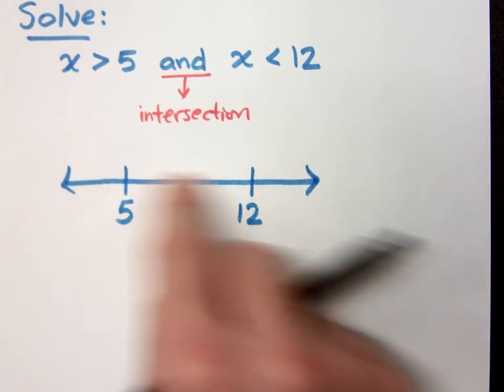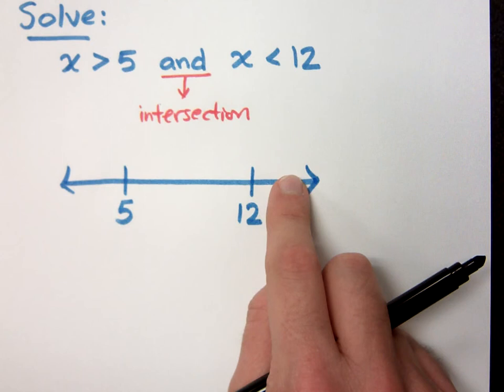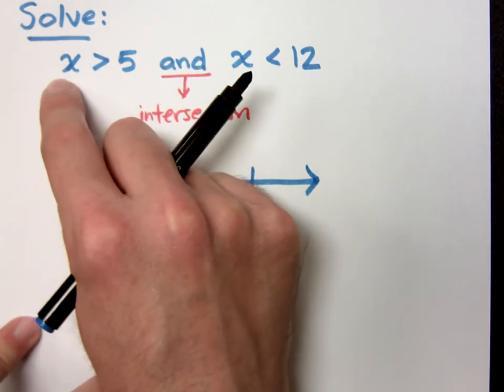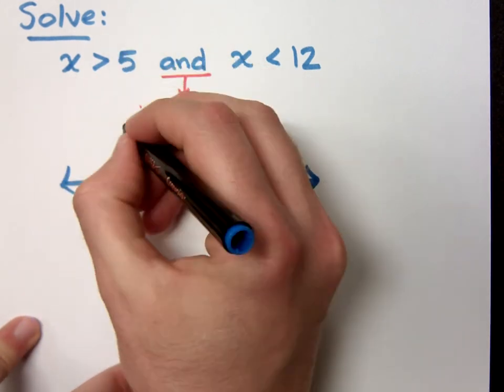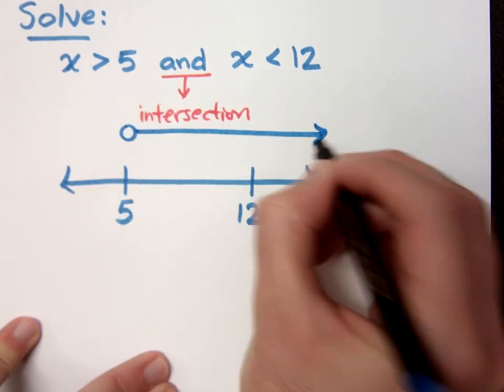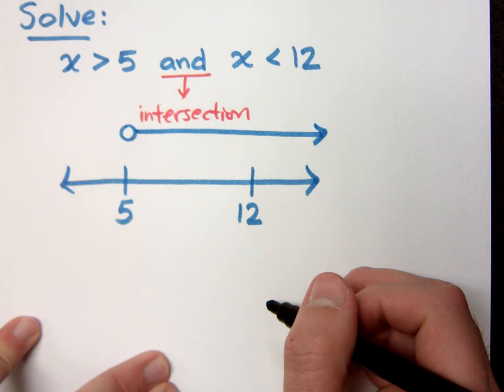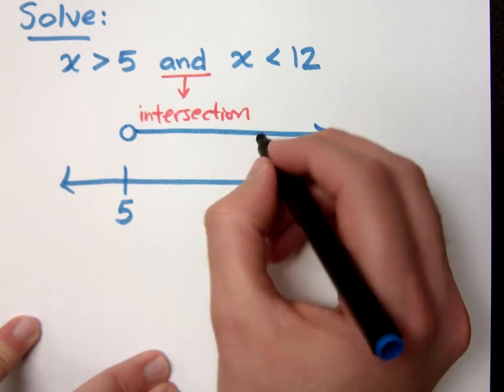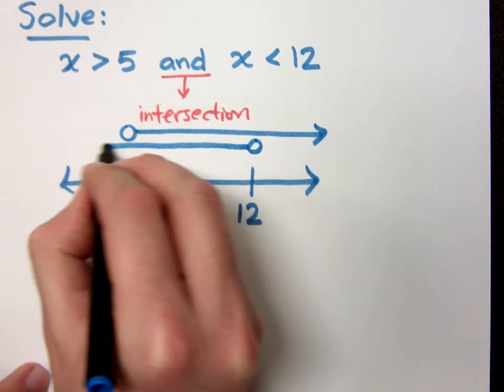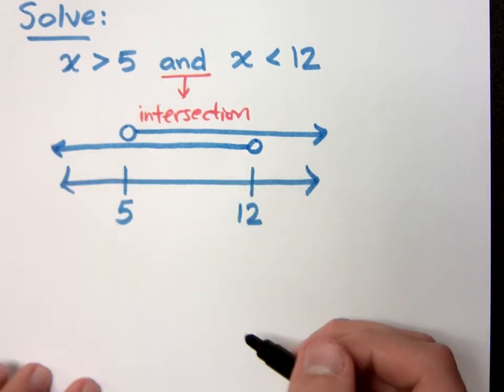Now, I'm not going to do anything on this number line just yet, so don't draw anything on here. Instead, I want you to kind of lightly graph above this what each of these guys are. x is greater than 5 is an open circle at 5, going all the way up to the right. x is less than 12 is an open circle at 12, going all the way up to the left.